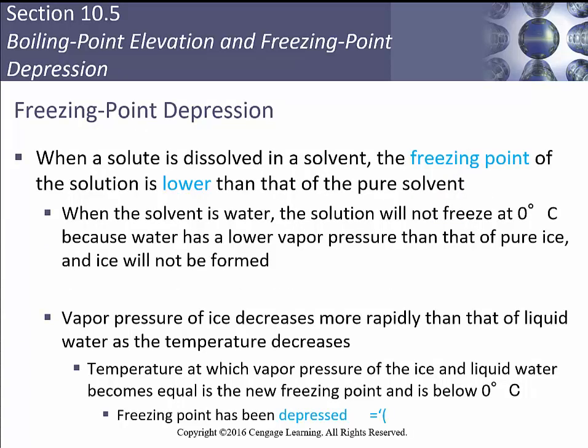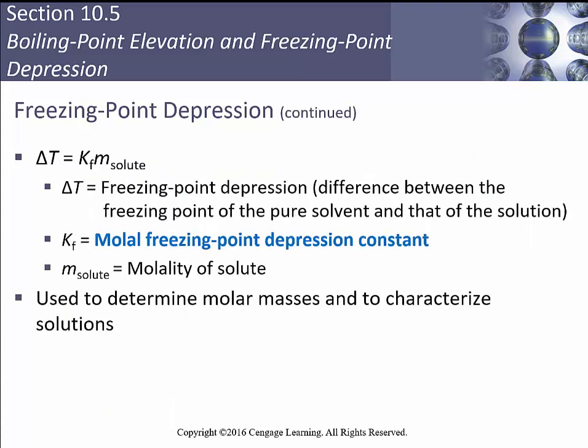Freezing point depression: when a solute is dissolved in a solvent, the freezing point of the solution is lower than that of the pure solvent. When the solvent is water, it will not freeze at 0°C but at a lower temperature. The vapor pressure of ice decreases more rapidly than that of liquid water as temperature decreases; the temperature at which both vapor pressures become equal is the new, depressed freezing point. The equation is: ΔT = Kf × m.